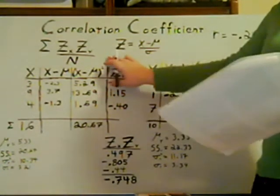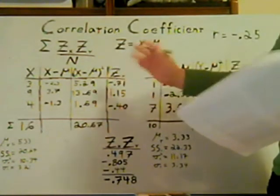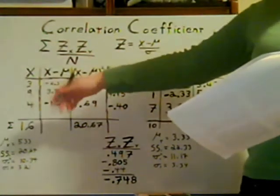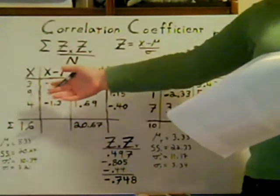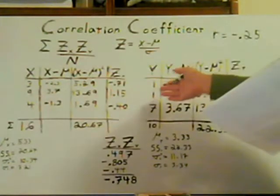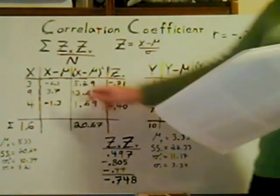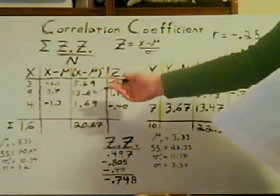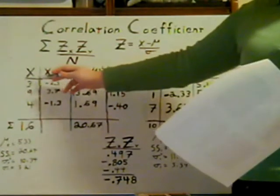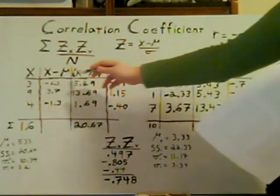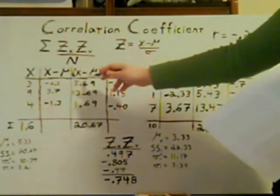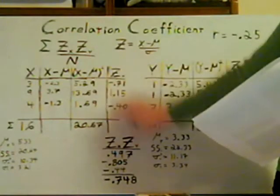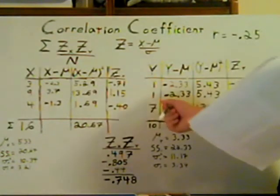To start a correlation coefficient, you'll first need your two variables. We'll say the number of dice is x and the number of tabletop games is y. We're going to make a table with the columns x, x minus mu, x minus mu squared, and z of x — that's the only real new one, because we need the z-scores for this.